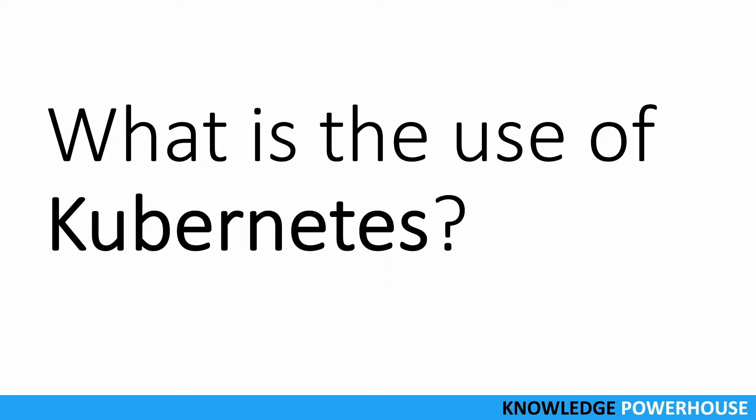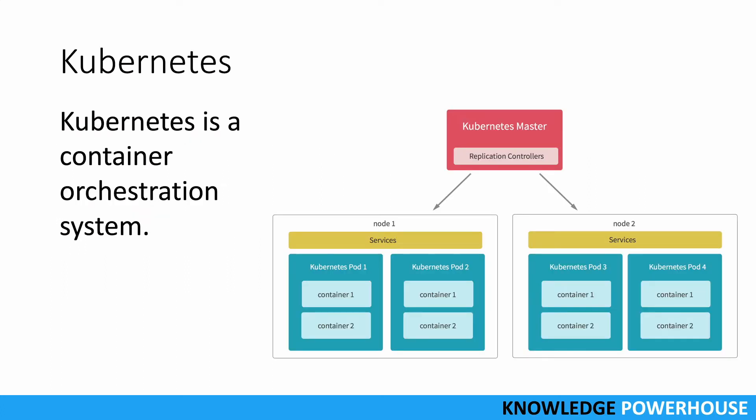In short, Kubernetes is a container orchestration system. There are three terms here: container, orchestration, and system. A container is a very popular trend where we package our binaries and applications as containers rather than independent JAR files. Kubernetes is needed to orchestrate those containers - to manage the containers running your application.